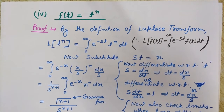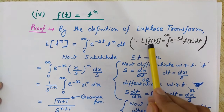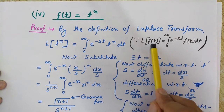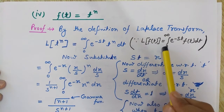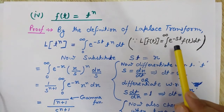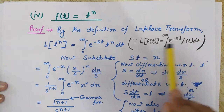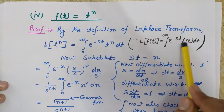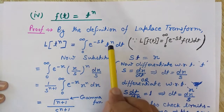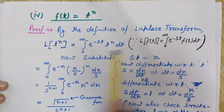Let's start with the definition of Laplace transform. The Laplace transform of any function f(t) — here L is the Laplace operator — is given by the integral from 0 to infinity of e raised to the power minus st, times f(t), dt. In this case our function f(t) is t to the power n.